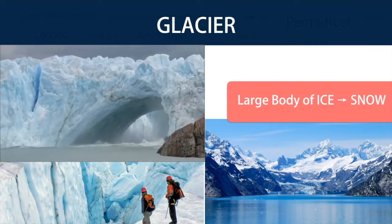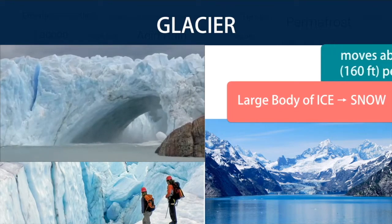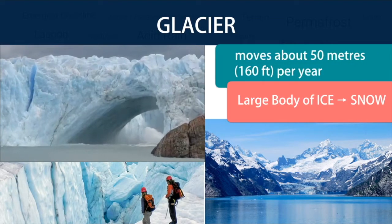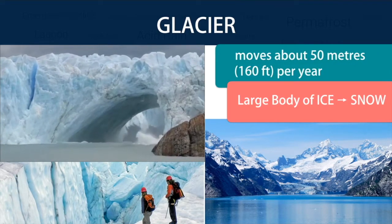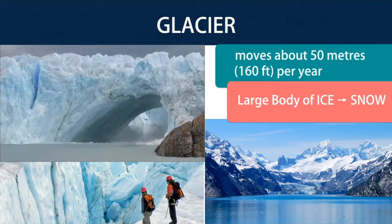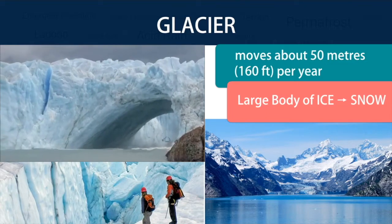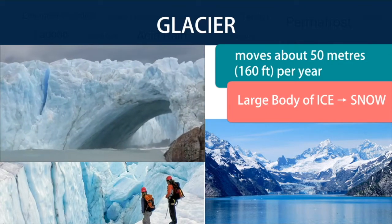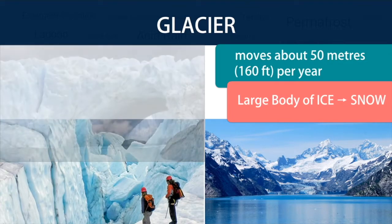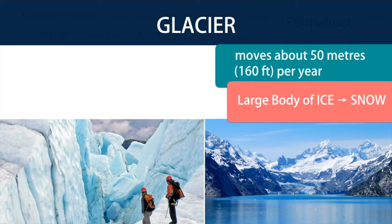A glacier only moves about 50 meters or 160 feet per year. New snowfalls replace the parts that flow away. Glaciers are the largest sources of fresh water on the earth. The largest bodies of salt water are the oceans.